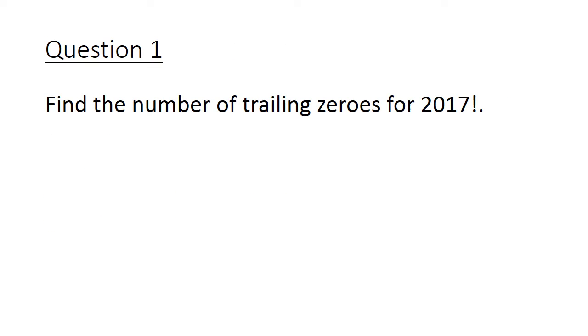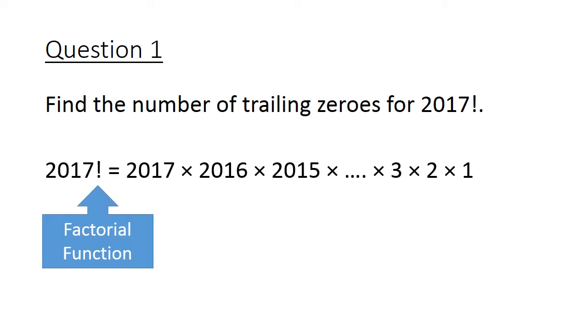So let's look at our first math problem. Find the number of trailing zeros for 2017 factorial. This exclamation mark refers to the factorial function. It basically means 2017 multiplied by 2016 multiplied by 2015 and so on until you multiply by 3, by 2, and finally by 1.